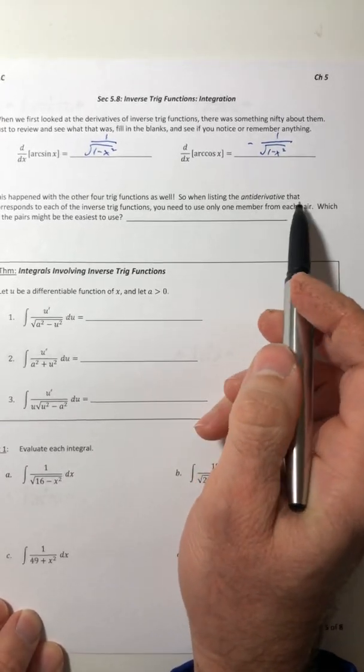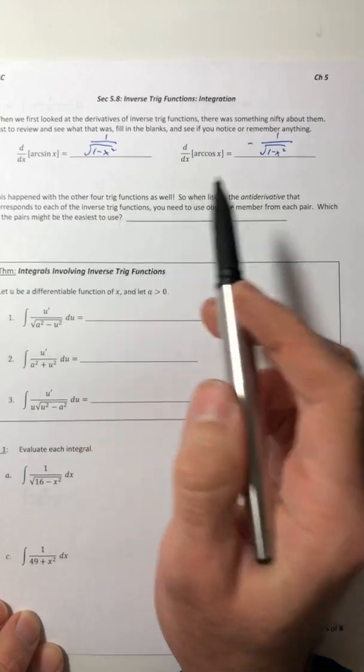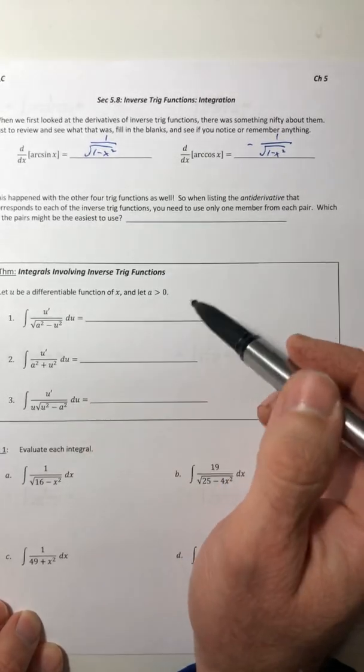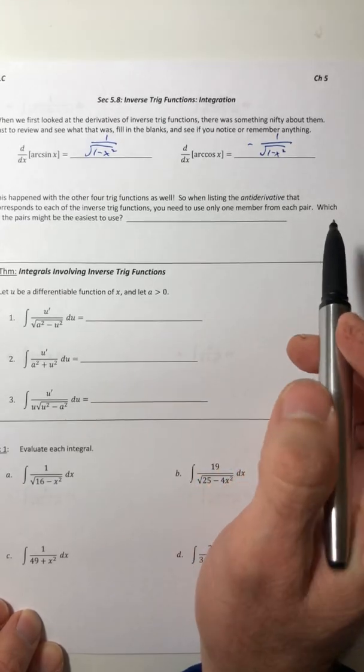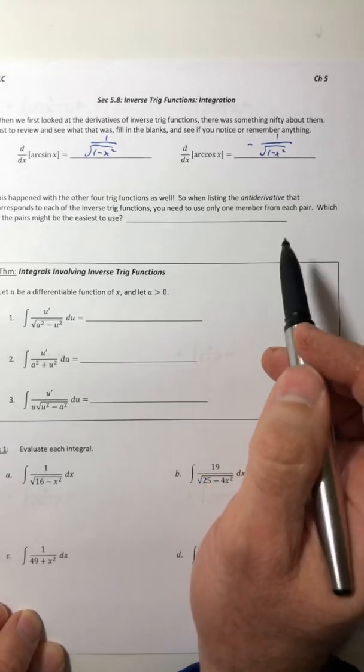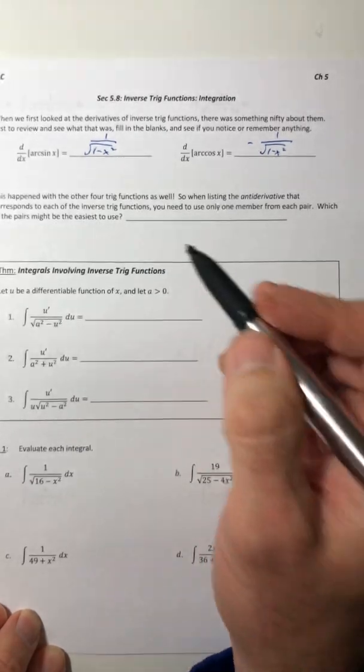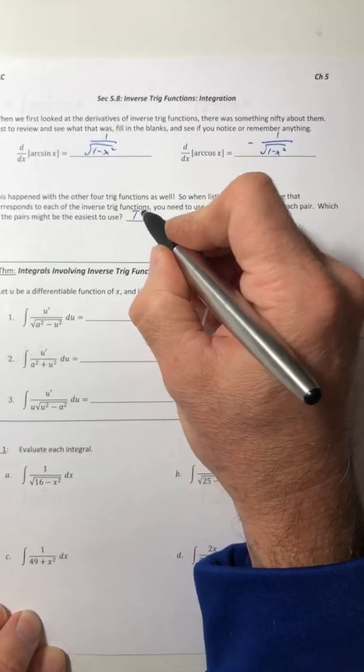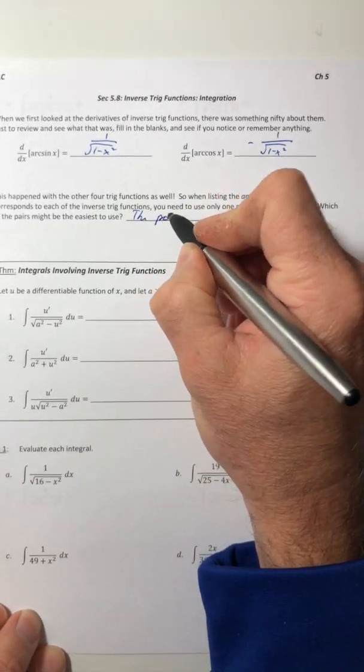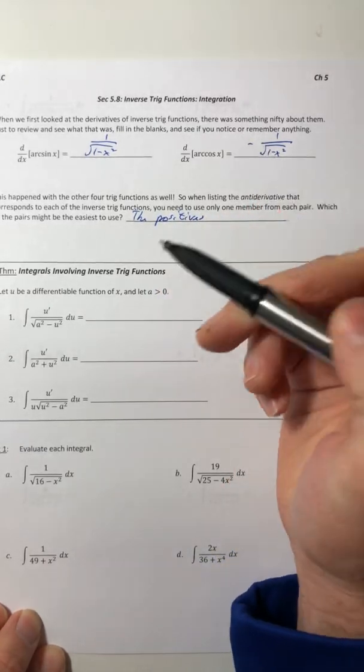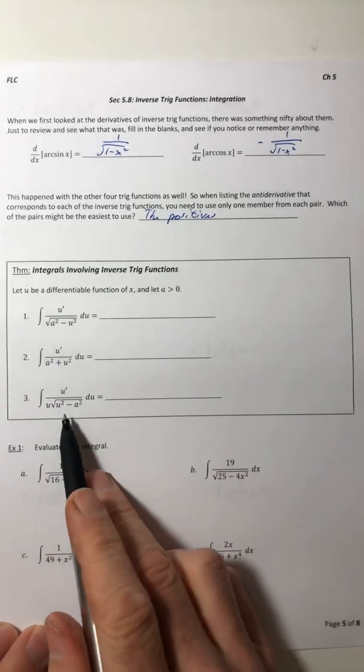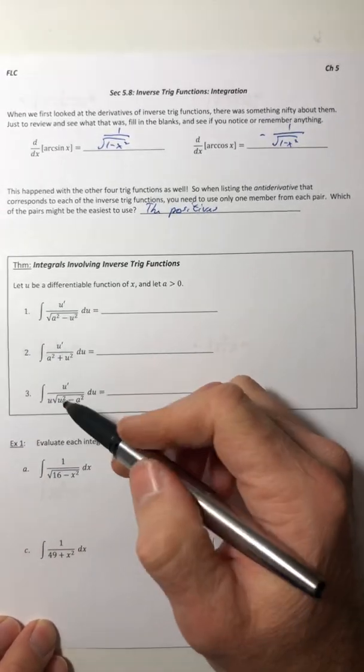Well the other four functions had something similar happen to them too. So when listing the anti-derivatives that correspond to each of the inverse trig functions, you only need to remember one member from each pair. So which of the pairs might be the easiest to use? Well the positives, because then you don't have to worry about a negative running around in there.